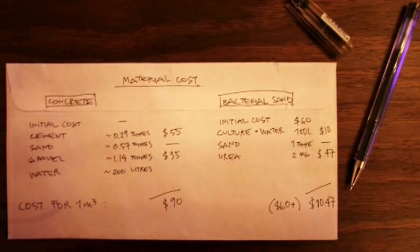So how much would this cost? I'm not an economist, but I did, quite literally, a back-of-the-envelope calculation. It seems that for a cubic meter of concrete, you'd pay around $90. But after an initial cost of $60 to buy the bacteria — which you never have to pay again — one cubic meter of bacterial sand would be about $11.